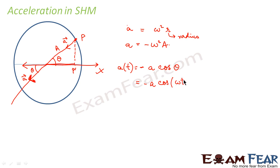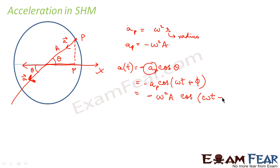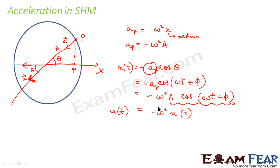Here θ is nothing but ωt + φ. The acceleration A is the acceleration of the particle P moving in a circular path. So the acceleration of the projection equals minus ω²A cos(ωt + φ). Now, A cos(ωt + φ) is nothing but x(t). So we see that acceleration equals minus ω²x(t), meaning acceleration is directly proportional to the displacement.